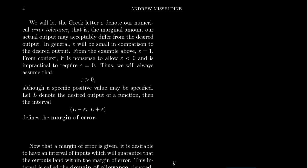And so this is what we mean by error. Let the Greek letter epsilon denote our numerical error tolerance. The Greek letter epsilon is sort of like the Greek equivalent of E, E for error here. What is our error tolerance? It's the marginal amount of actual output which is acceptable from the desired one. When it came to the example with the furnace, our desired output, which we call L, L is actually short for limit here, L was 200 degrees. But then we discovered that the error was allowed to be 1 degree Celsius.